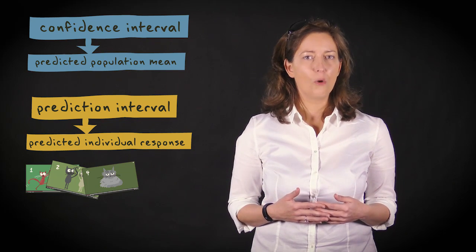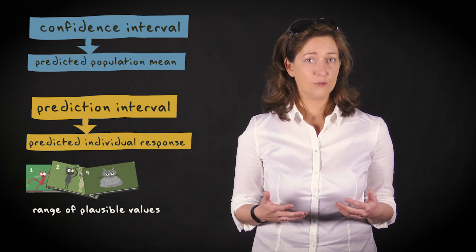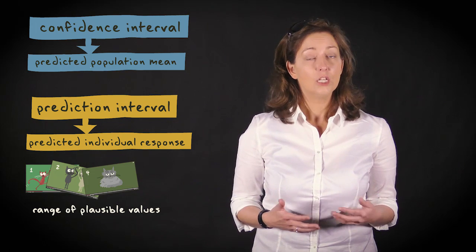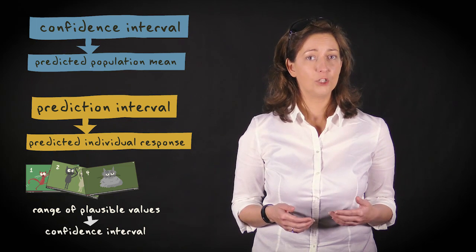Suppose we want to know what the range of plausible predicted scores is when a cat is one year old. The width of this range will tell us something about the accuracy of our prediction. To determine this range we need to calculate a confidence interval, just like we did with the regression coefficient.